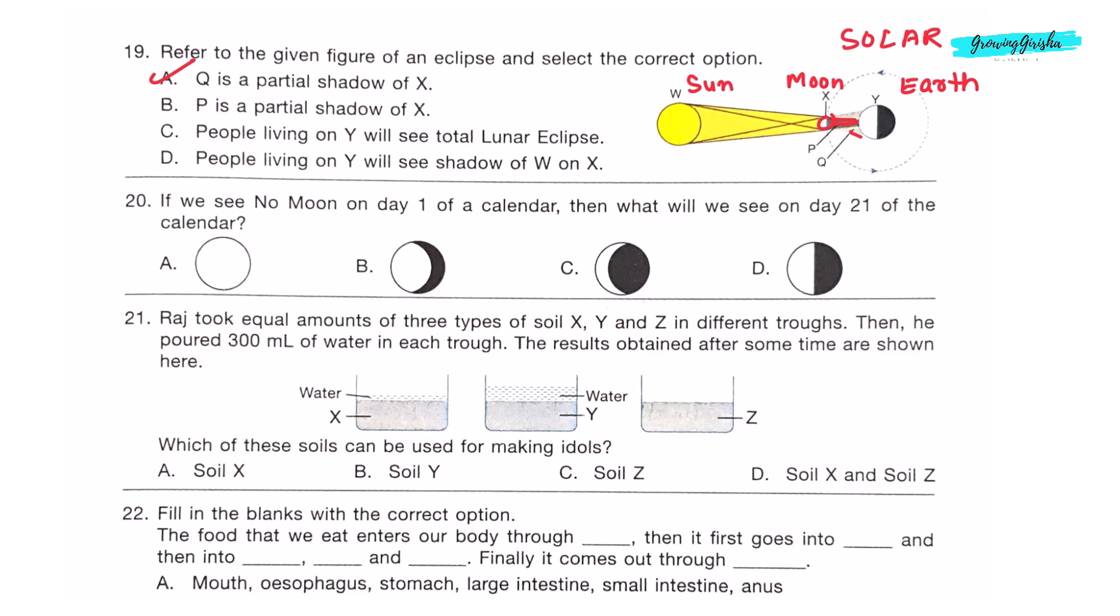Question 20: If we see no moon on day 1 of a calendar, then what will we see on day 21 of the calendar? After 21 days of no moon, half moon phase can be seen. So option D is the correct answer. Question 21: Raj took equal amounts of three types of soil X, Y and Z in different rows. Then he poured 300 ml of water in each row. Which of these soils can be used for making idols? Soil X is loamy soil, Soil Y is clayey soil, and soil Z is sandy soil. Clay soil is used for making idols. So option B is the correct answer, Soil Y.